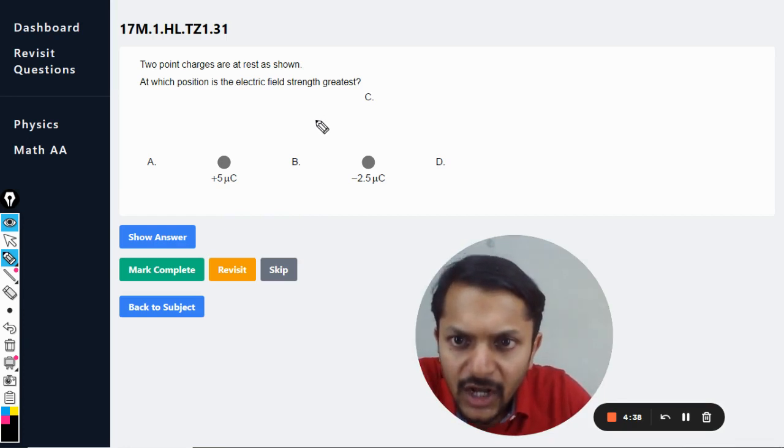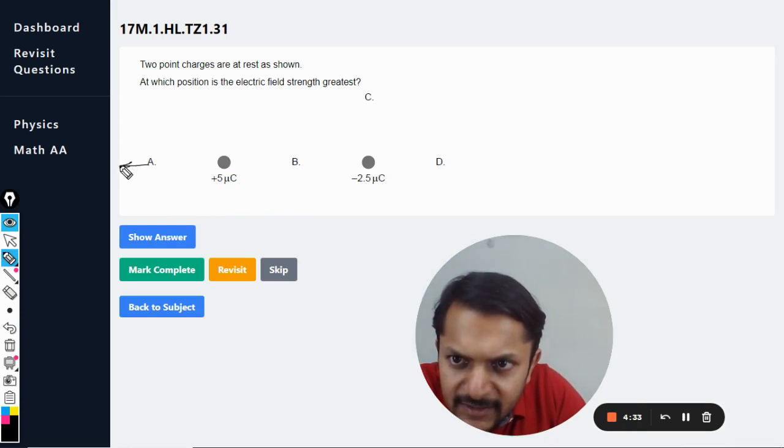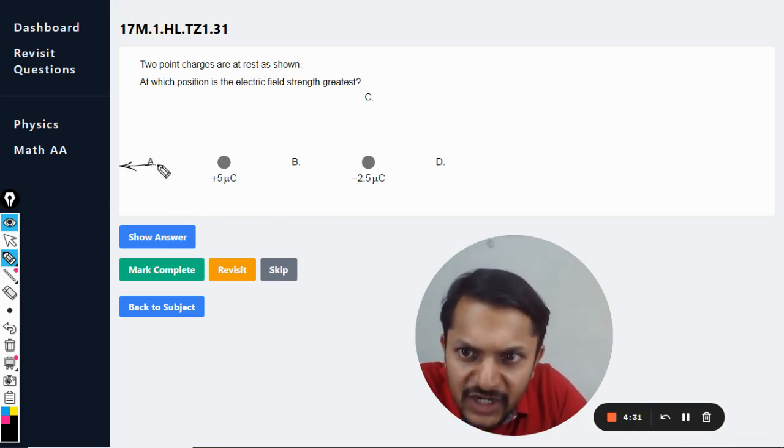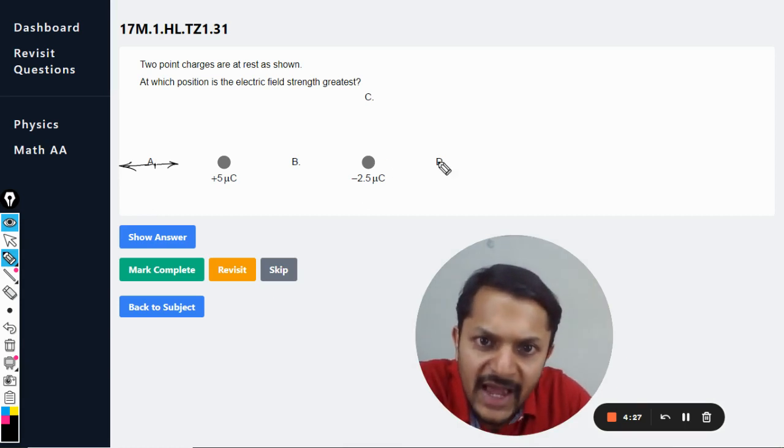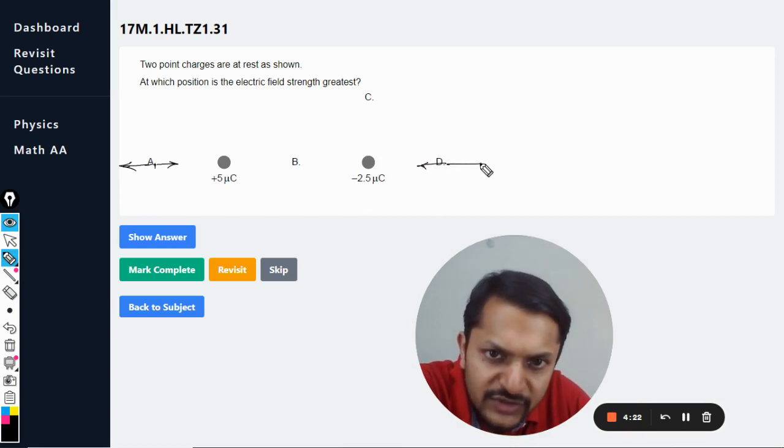So let us concentrate on A. The positive charge would be repelling and the negative charge will be attracting. So these two electric fields are acting opposite to each other.